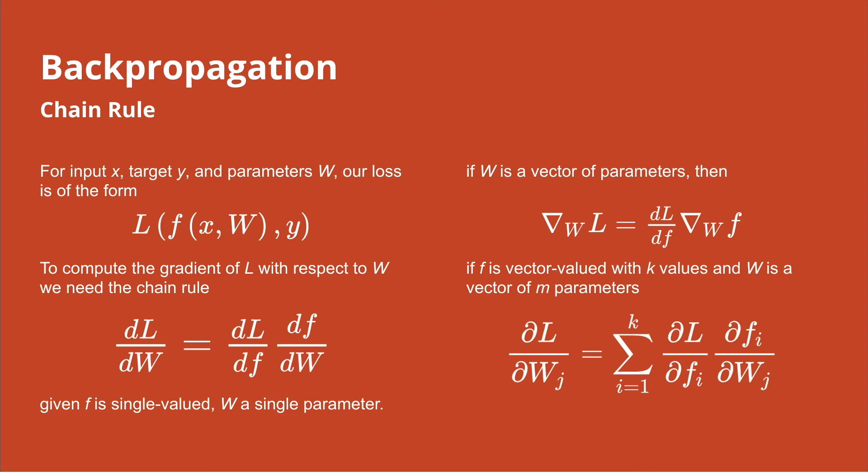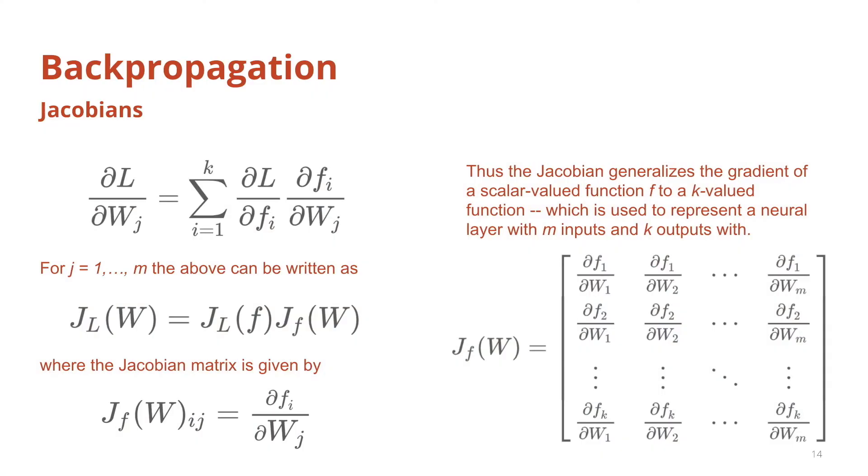And here on the slide, I have outlined how the chain rule actually works. Now, one way of representing the chain rule for vector-valued functions is to use Jacobian matrices. Here, the gradient of multivariate vector-valued functions could be summarized as a matrix multiplication like you can see on the slide.